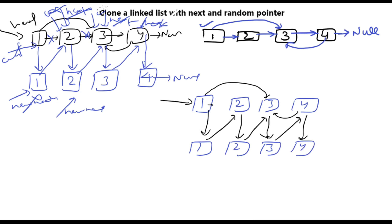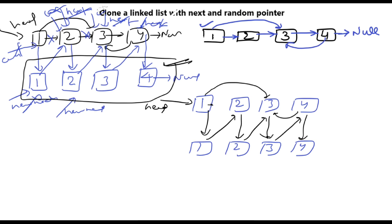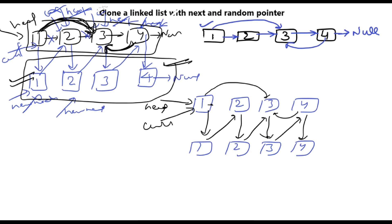Here is my head pointer — this is my original structure. And this is my copy structure which I made, which will be my output. This was the given structure. Inside it, this is the arbitrary pointer connection. These connections belong to the new structure.